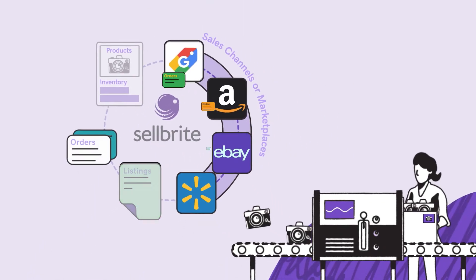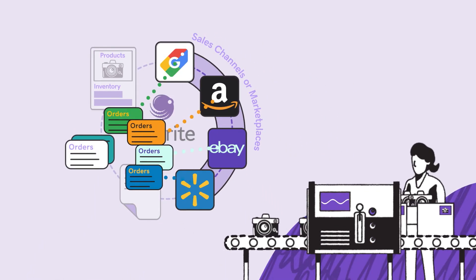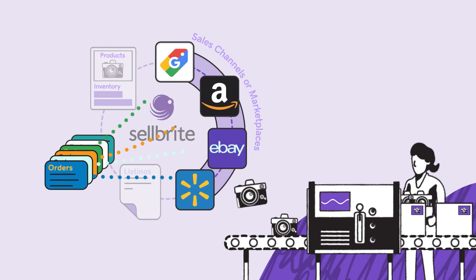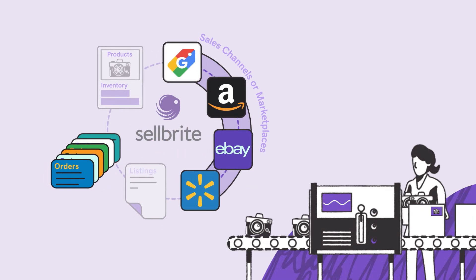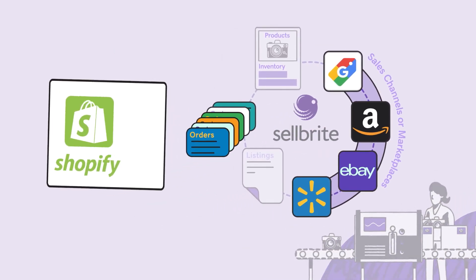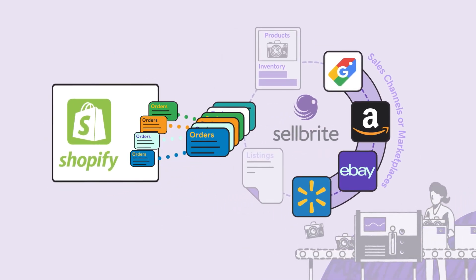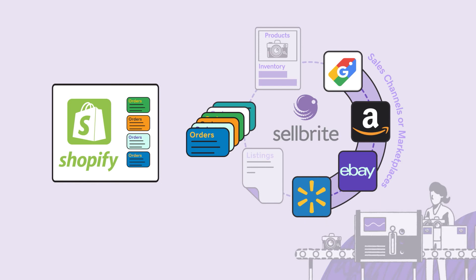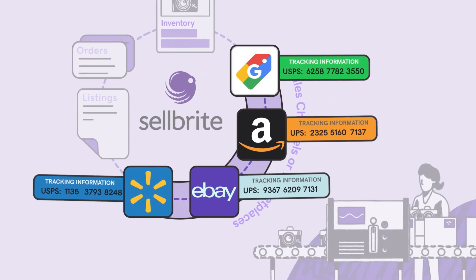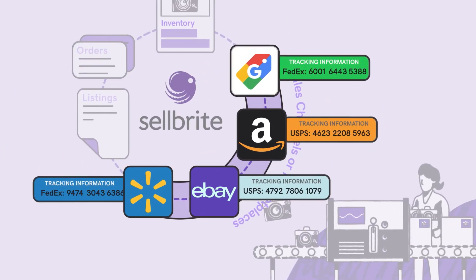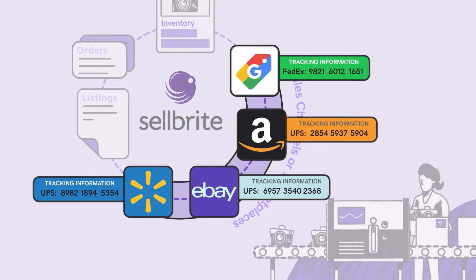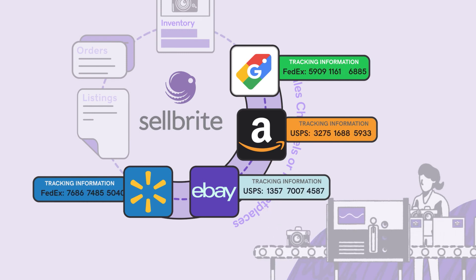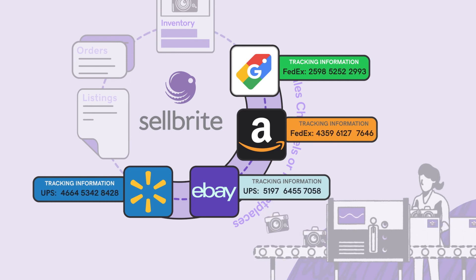Orders from the marketplaces are constantly imported into Cellbrite. Once imported, Cellbrite will route these orders over to Shopify so you can fulfill them alongside the orders from your store. Tracking information for the shipments will be automatically updated on the marketplace where the order originated.